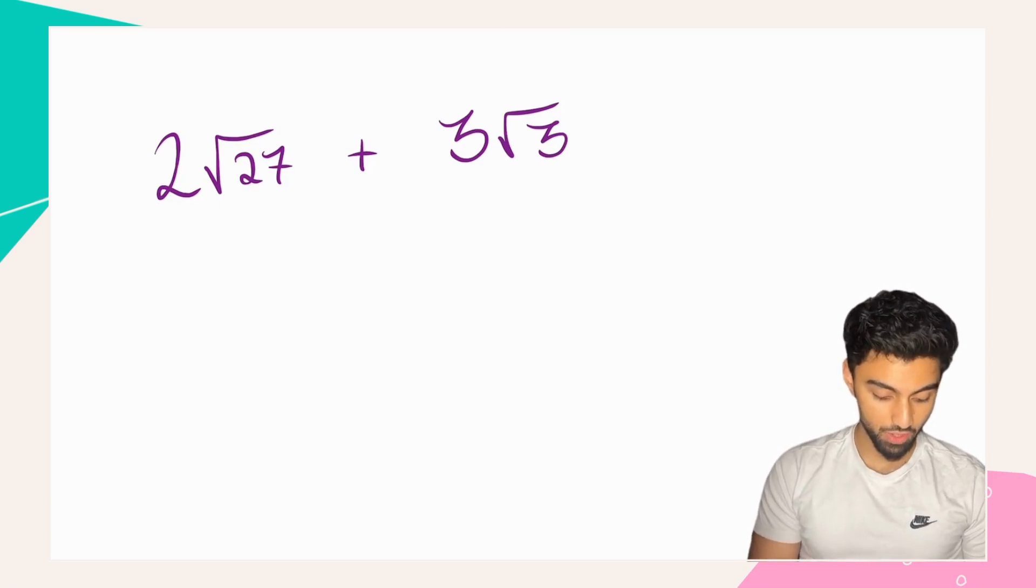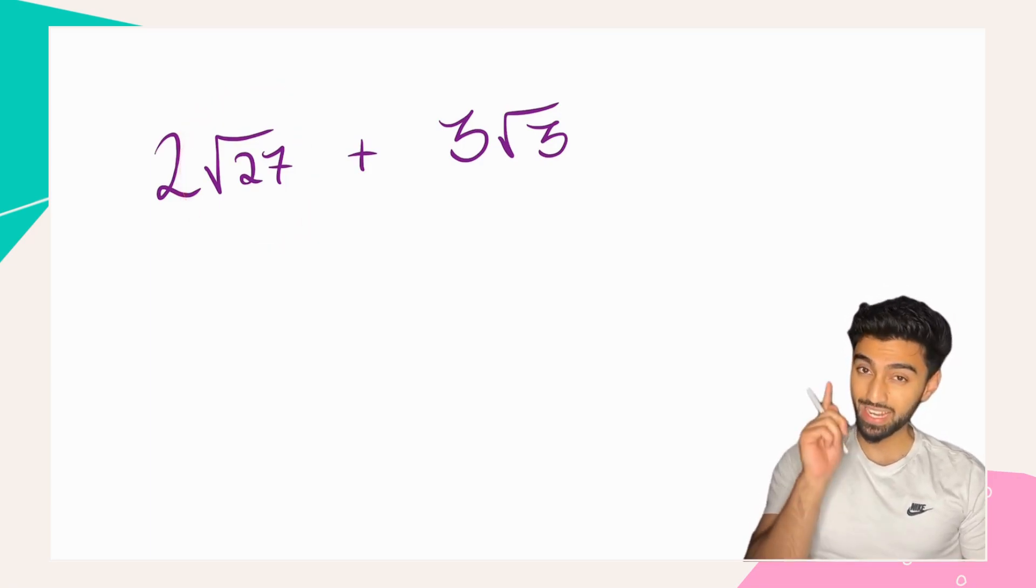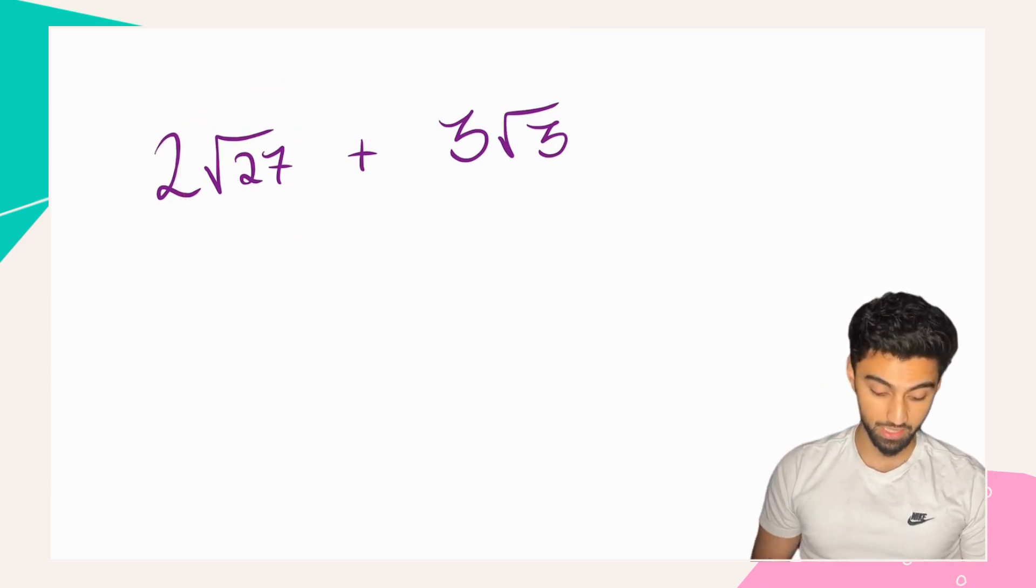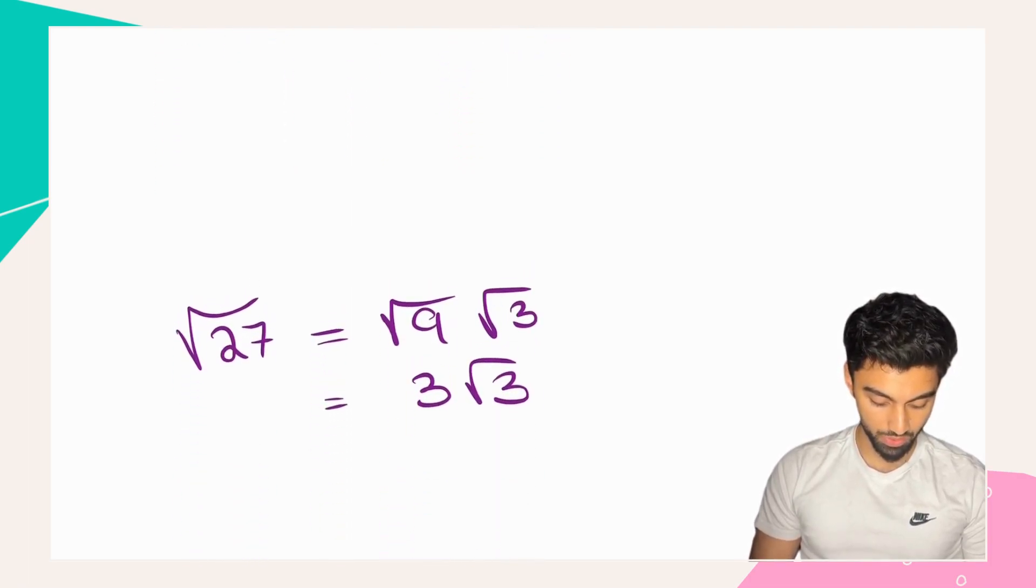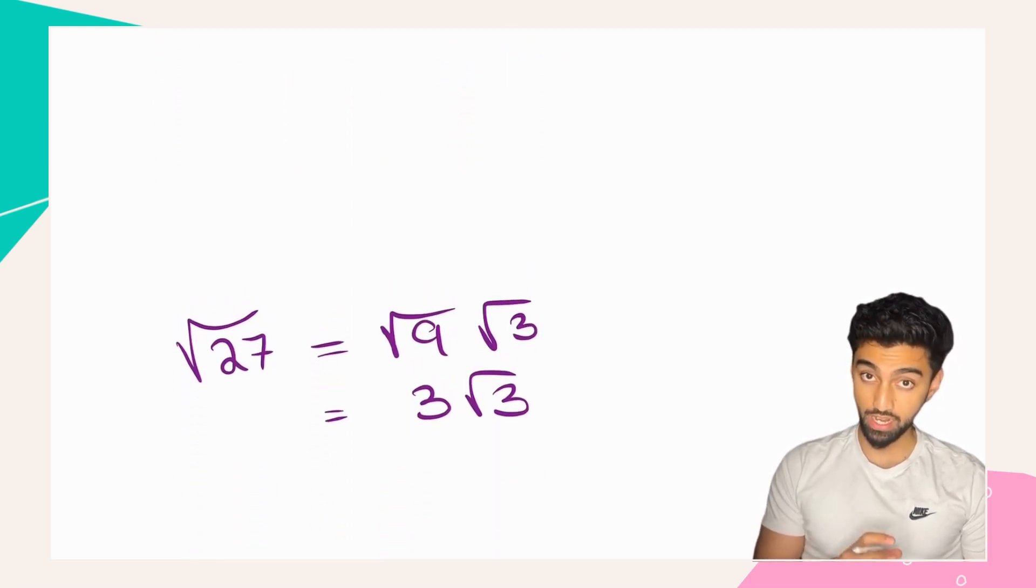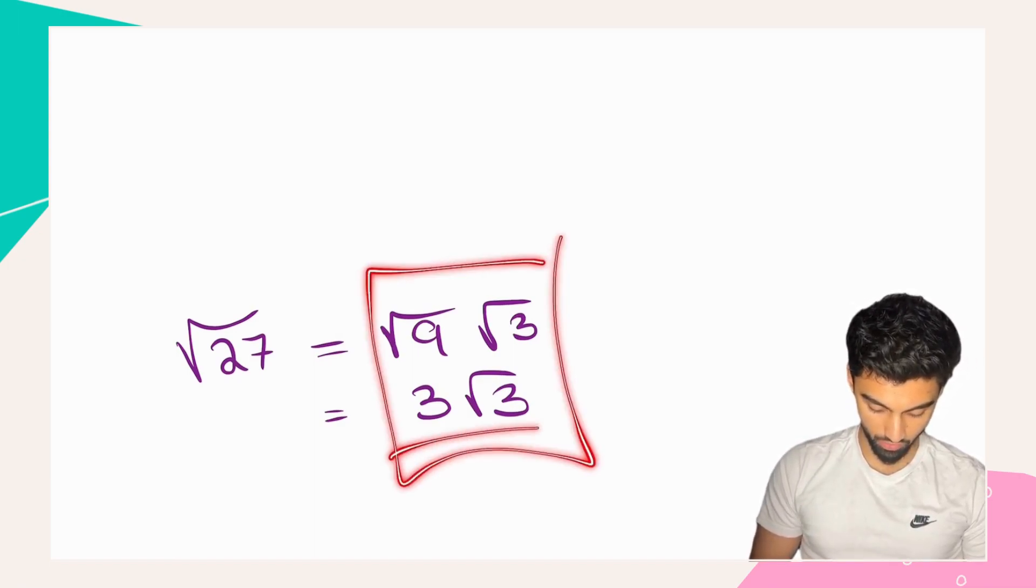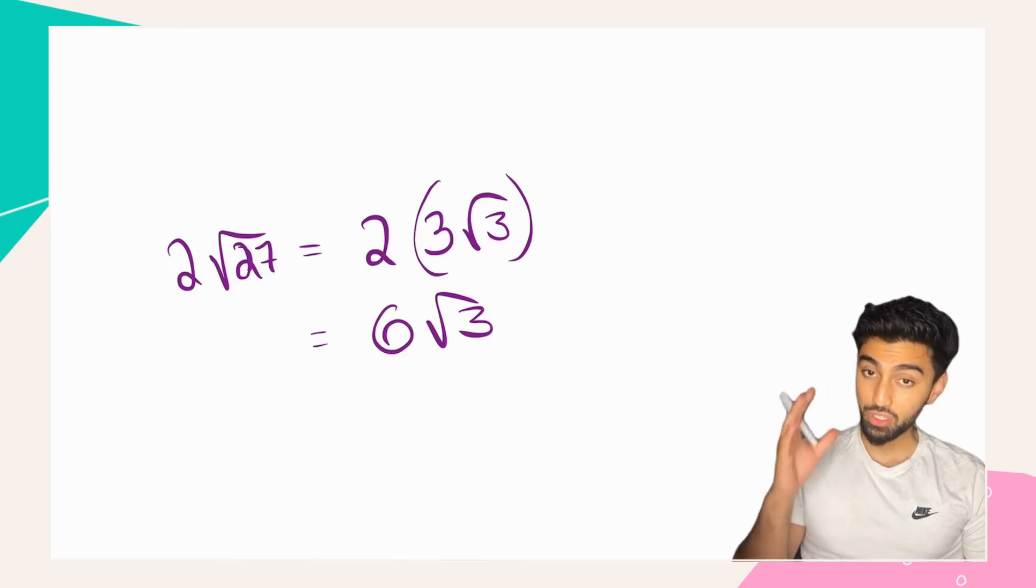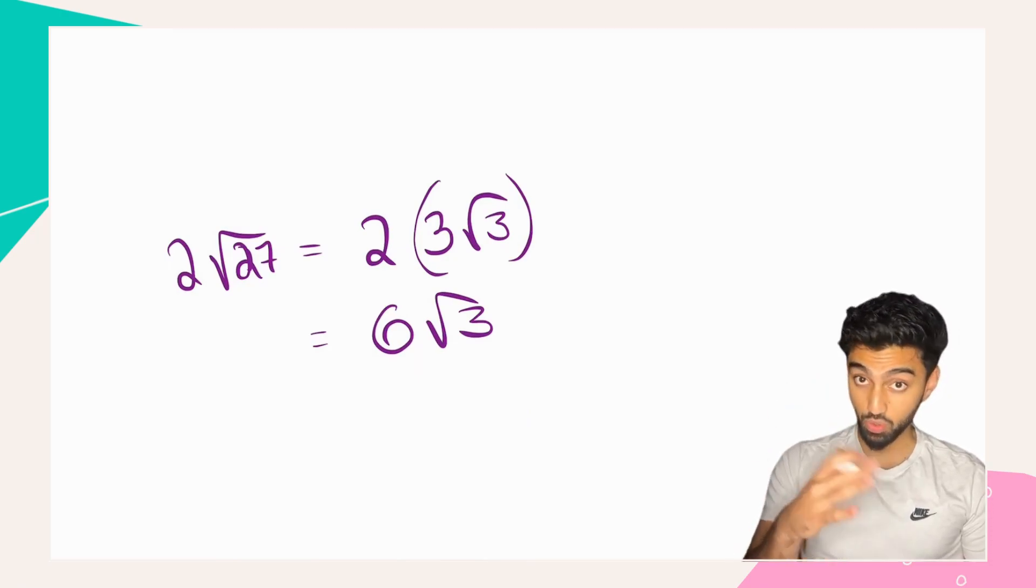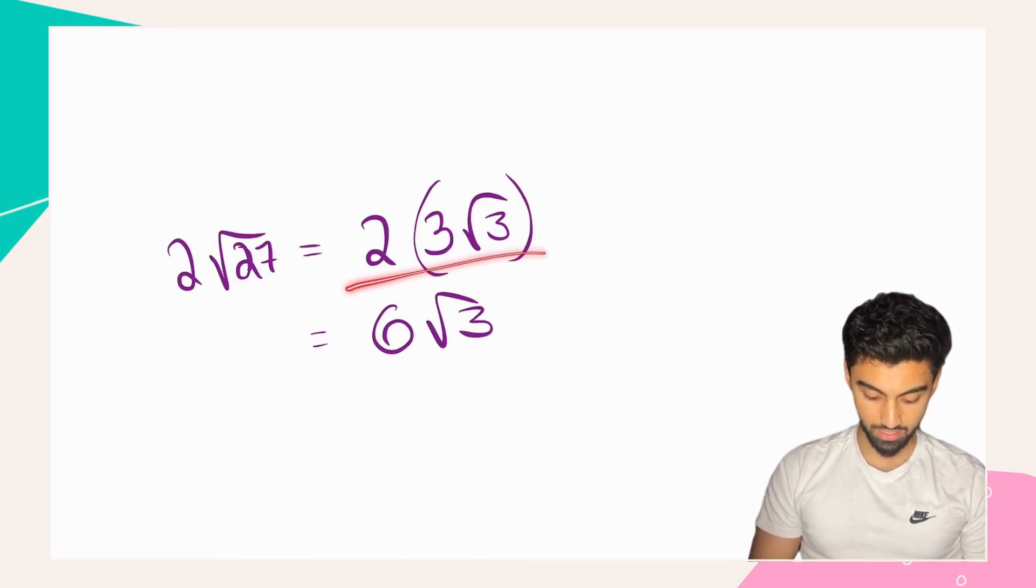However, if you look closely, root 27, we can actually simplify using simplification of thirds. We can rewrite root 27 as root 9 times root 3, which then simplifies to 3√3. So, 2√27 is just going to be 2 lots of 3√3, which is 6√3.